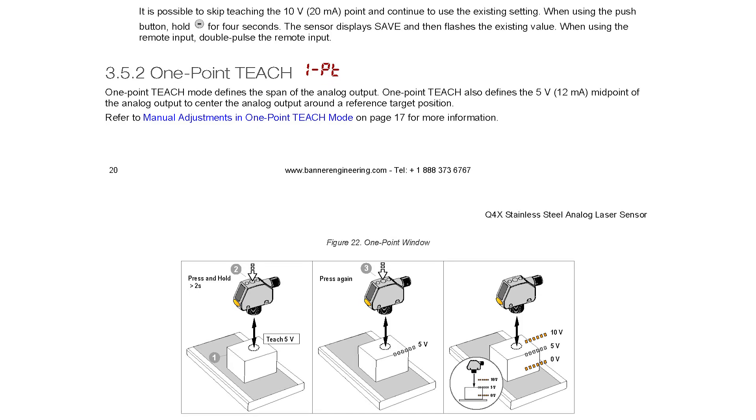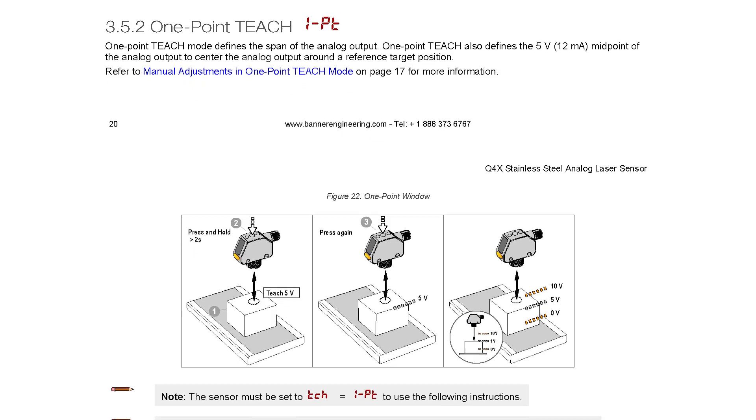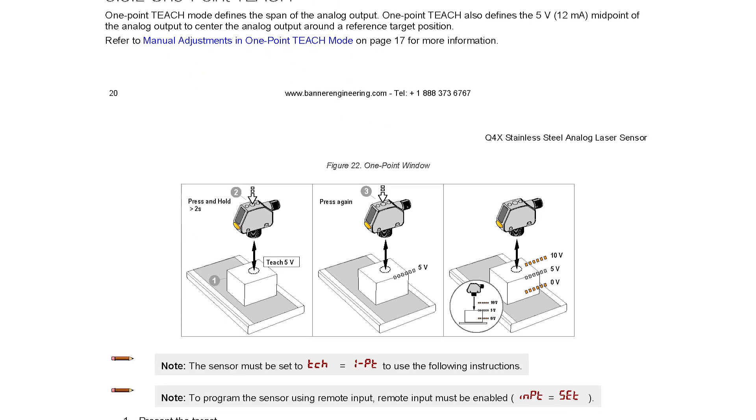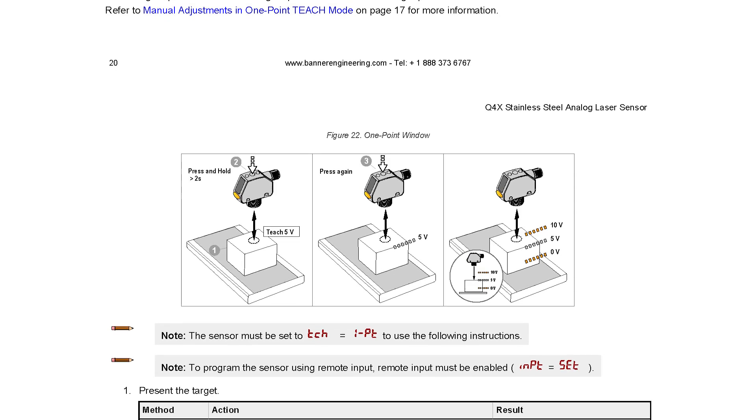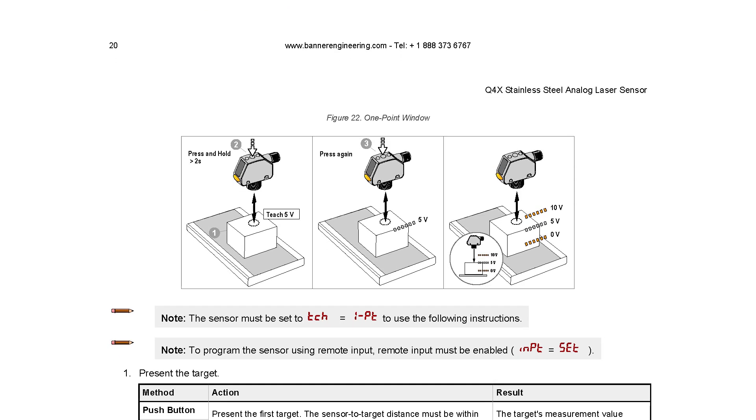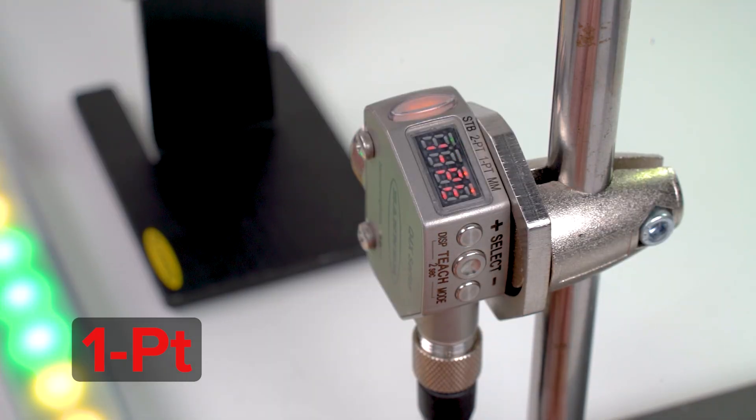The one-point teach method allows you to teach the sensor to the midpoint of the span, meaning that you will teach the distance corresponding to 12 milliamps or 5 volts, and the full measurement range is set around this point. After selecting one-point from the teach mode menu,